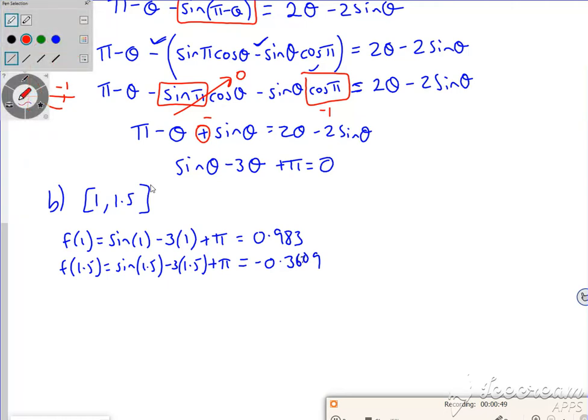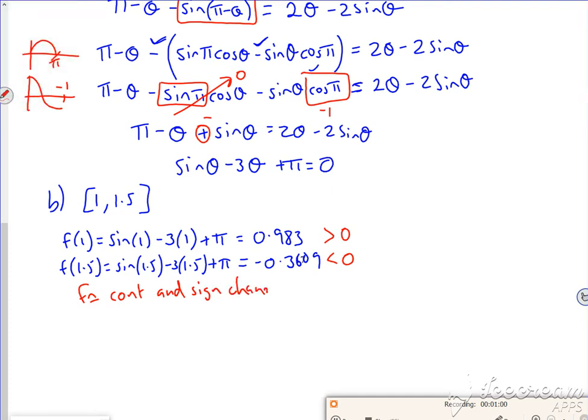The mark scheme makes you put greater than zero and less than zero. So the function is continuous and there's a sign change. Therefore, the root must be in the interval 1 to 1.5.